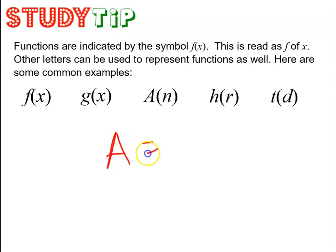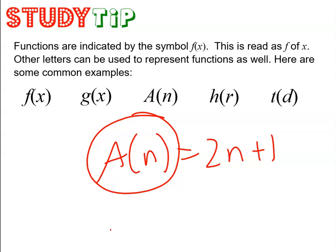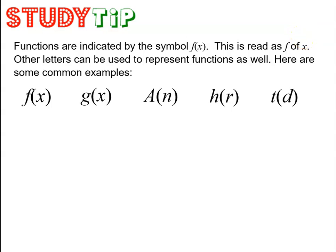Something like this could work — that would be appropriate. Again, this part out here is really just telling you the name of the function and what letter the variable is that you're going to use inside the function. It's not different than y equals. The issue with y is that every function was called y. And so now when we use this function notation — f of x, g of x, a of n — it really allows us to be more specific in telling what it is the problem is talking about.